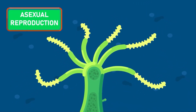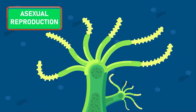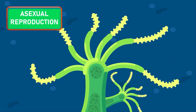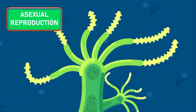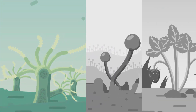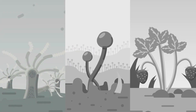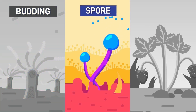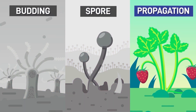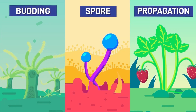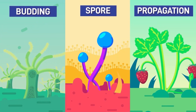Asexual reproduction is the production of new individuals that does not involve fertilization — that is, there is no fusion of two reproductive cells. In asexual reproduction, organisms reproduce by mechanisms like budding, spore formation, or vegetative propagation. In such mechanisms, organisms produce identical copies of themselves by reproduction.